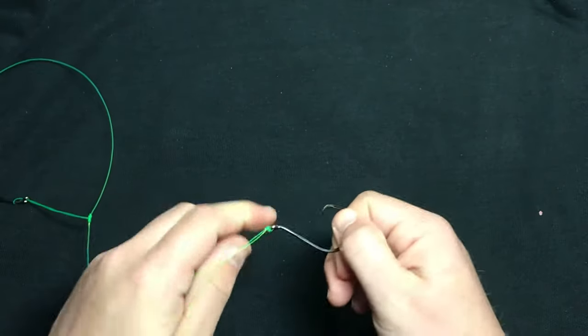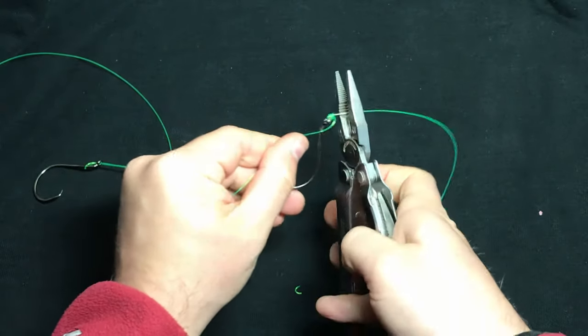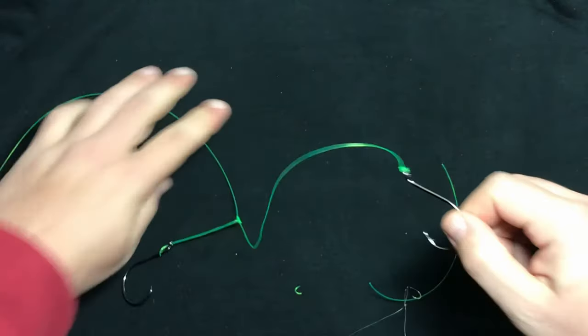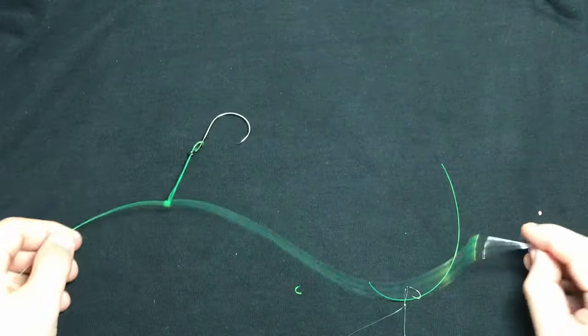And once I've done that, take my pliers and clip off the tag end. And that right there, my friends, is how we tie two hooks onto one line.